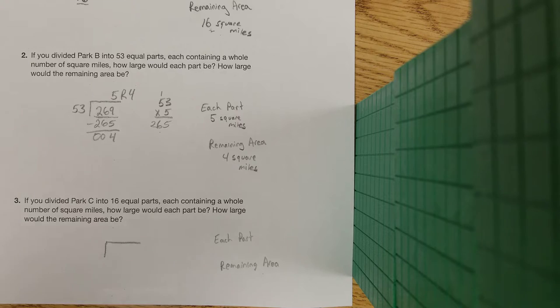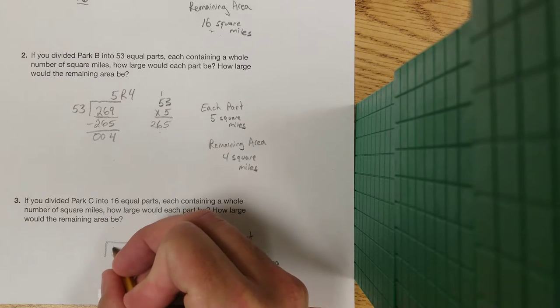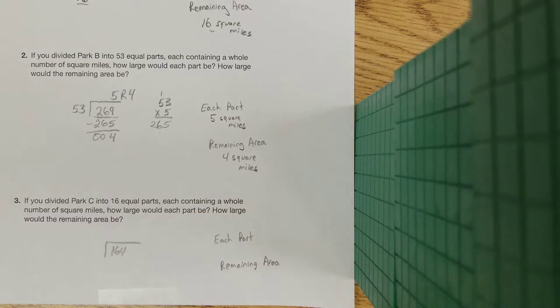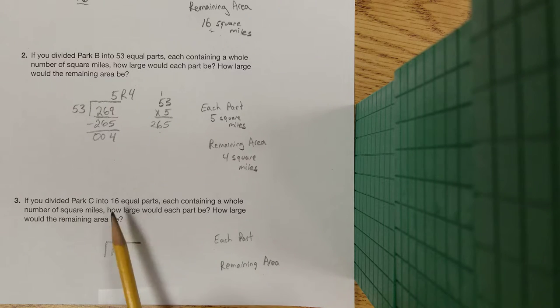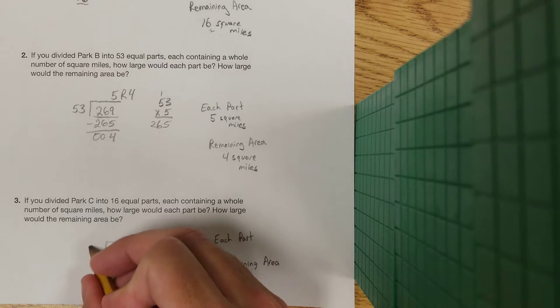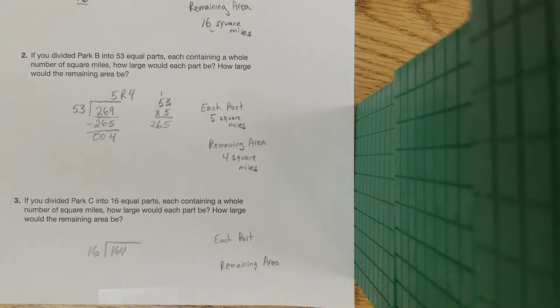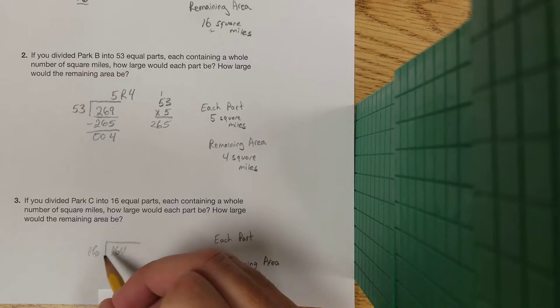Last one, we're dealing with Park C. Again, up at the top it says that Park C is 164 square miles, so I'm going to put my big piece is 164 square miles, and I'm splitting into 16 equal parts. So now I just have to do the division. Will 16 go into 1? No it won't. Will it go into 16? Well yeah, that's pretty easy, it will go in at one time.